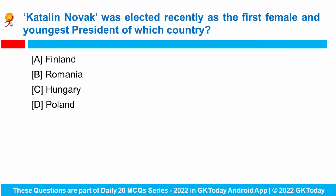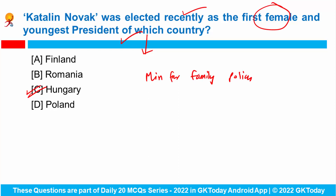Catalina Novak was elected recently as the first female and youngest president of which country? The parliament of Hungary has elected Catalina Novak as the country's first ever female president, and she is also Hungary's youngest ever head of state. Earlier she served as a minister for family policy and was known for government policies including tax breaks and handouts designed to encourage young families to have more children.